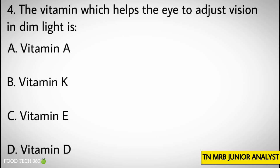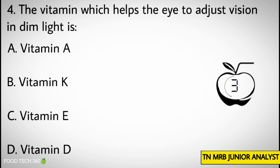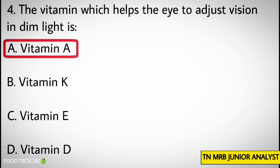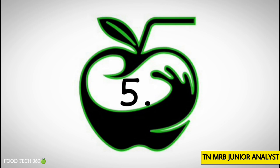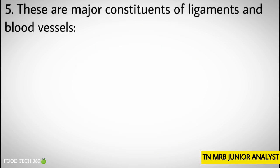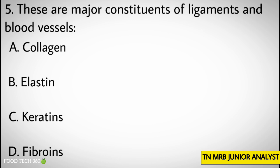Question number 4: The vitamin which helps the eye to adjust vision in dim light is — Options: A. Vitamin A, B. Vitamin K, C. Vitamin E, D. Vitamin D. Correct answer: A. Vitamin A.